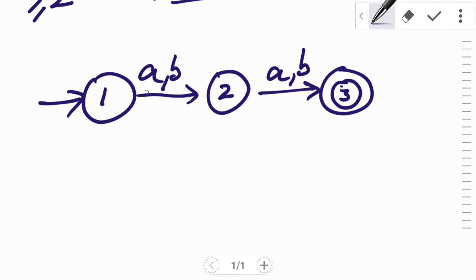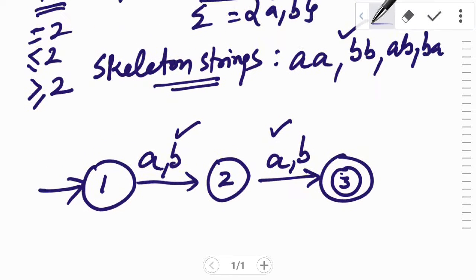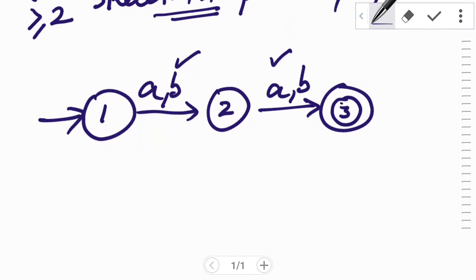Now check for the strings ba. The given condition is already fulfilled since ba is accepted. The last string was ab. AB has also been accepted by construction of the previously designed structure, so ab has also been accepted.